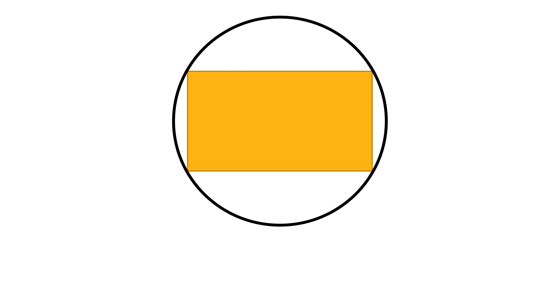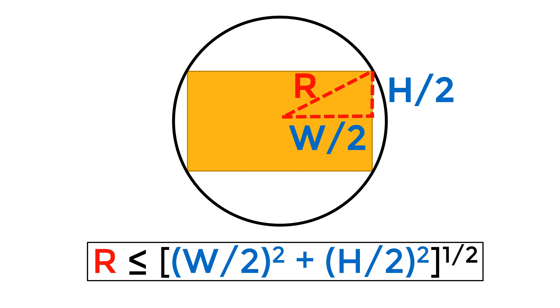You may want to visit my other tutorial video about this by clicking upper right corner. The relation that you can use is R equal to or less than square root of (W over 2) squared plus (H over 2) squared using Pythagorean theorem.